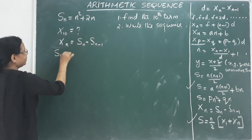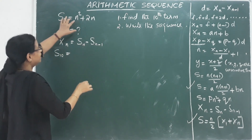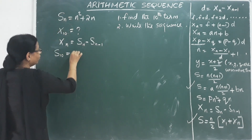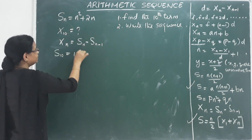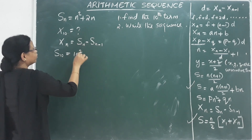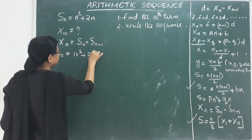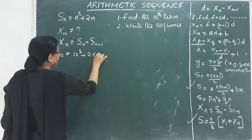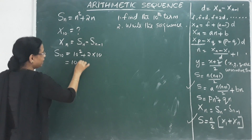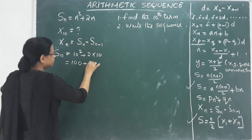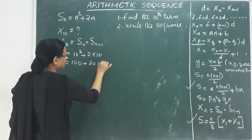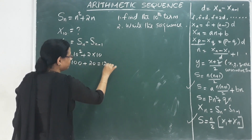We find S10 by substituting n equals 10: S10 equals 10 squared plus 2 into 10, that means 100 plus 20, which equals 120.